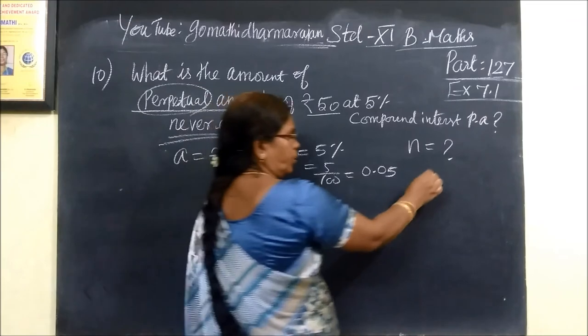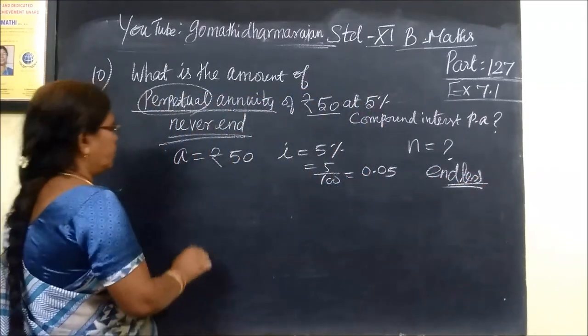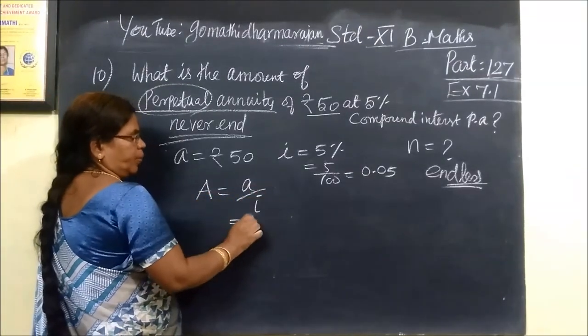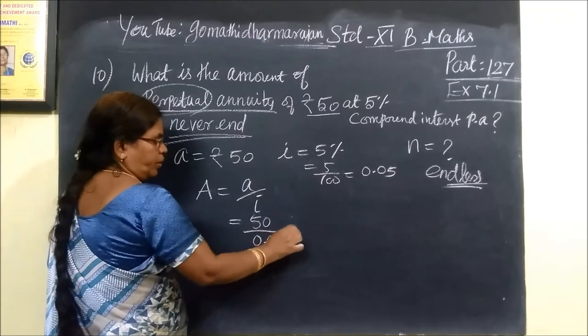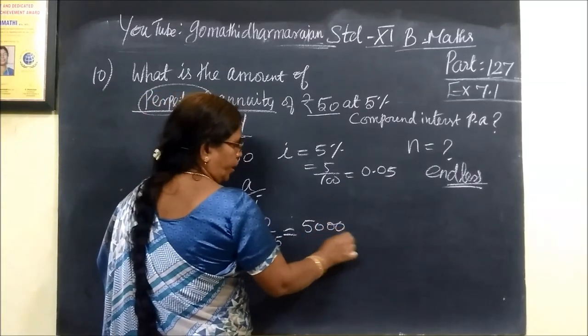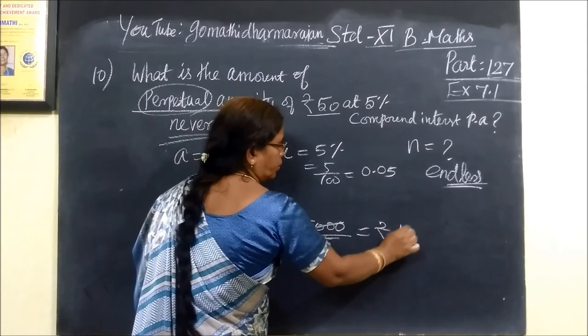So N is equal to infinity. We are using the formula P equal to A by I. A is equal to 50, I is equal to 0.05. When you are using this formula, P equal to A by I is equal to 1000.